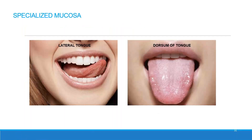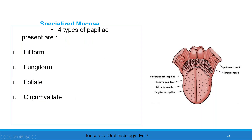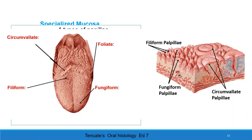Specialized mucosa. The dorsal surface of the tongue is covered with thick keratinized stratified squamous epithelium. It has long papillae and minor salivary glands. The sulcus terminalis divides the dorsal surface of the tongue into two parts: anterior two-thirds and posterior one-third. The four types of papillae present on the dorsal surface are filiform, fungiform, foliate, and circumvallate papillae.